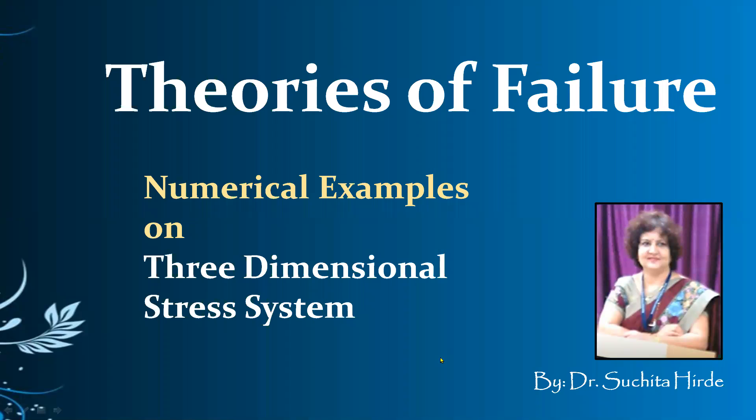There are 5 theories of failure. All the theories of failure are based on principal stress in the member. In all of these theories, the failure criteria in case of a member subjected to a complex state of stress is correlated with the stress obtained in the material when the member is subjected to uniaxial loading, i.e., a tension test. Welcome back to one more video on theories of failure. In this video, you will learn a numerical example on a 3-dimensional stress system using theories of failure.